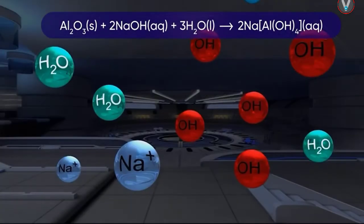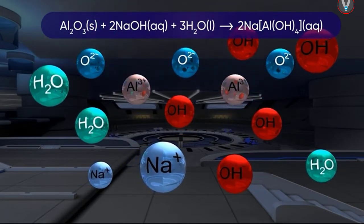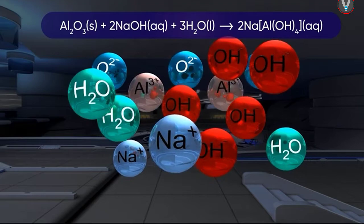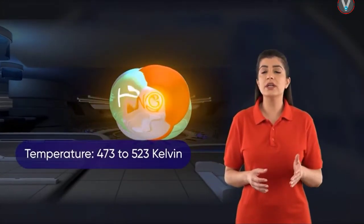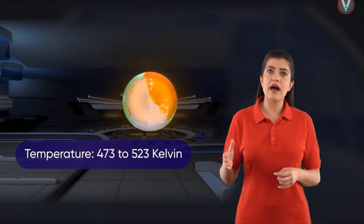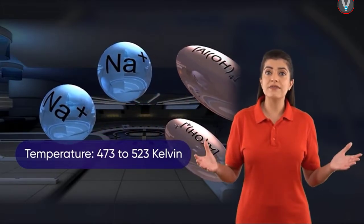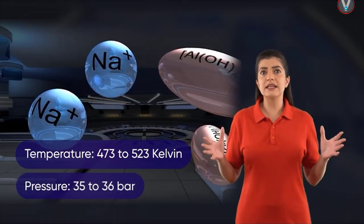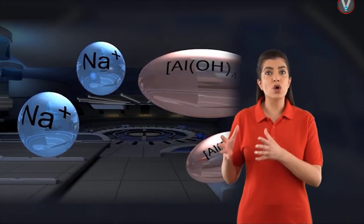Firstly, powdered bauxite ore is digested by washing with a hot solution of sodium hydroxide (NaOH) at 473 to 523 Kelvin temperature and 35 to 36 bar pressure. This converts the aluminium oxide in the ore to soluble sodium aluminate.